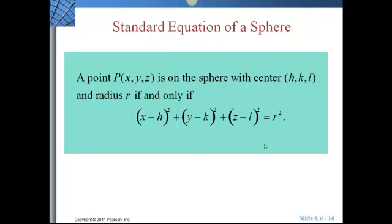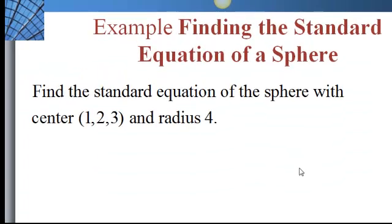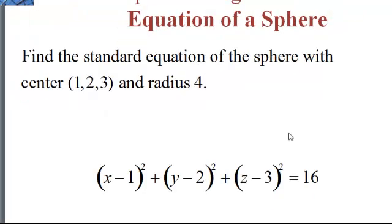Standard equation of a sphere: if we have a circle centered on the origin, it's x² + y² = r². For a circle shifted to center (h, k), we subtract h from x and k from y. For a sphere, we just add the third dimension: x² + y² + z² = r² for a sphere centered at the origin, or subtract the center coordinates when shifted. For example, a sphere with center (1, 2, 3) and radius 4 gives: (x − 1)² + (y − 2)² + (z − 3)² = 16.